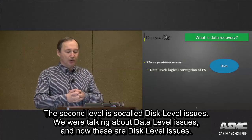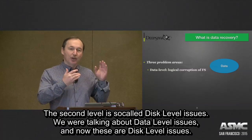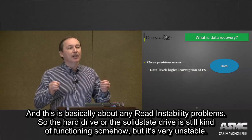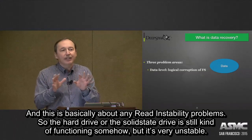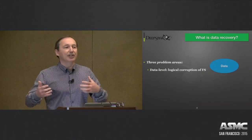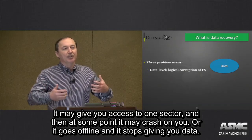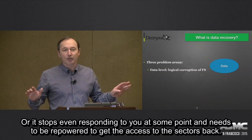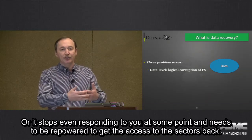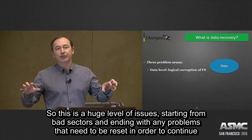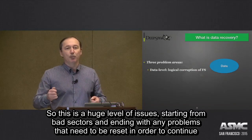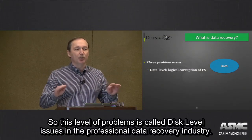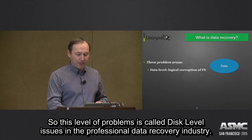The second level is called disk level issues. This is about any read instability problems — where the hard drive or solid-state drive is still functioning somehow, but very unstably. It may give you access to one sector, and then at some point it may crash, go offline, stop giving you data, or stop responding entirely and need to be re-powered to get access back. This is a large category of issues, starting from bad sectors and ending with any problems requiring a reset to continue. These are called disk level issues in the professional data recovery industry.